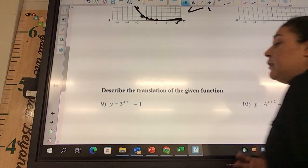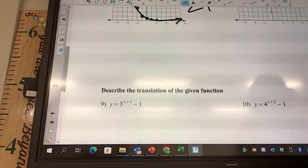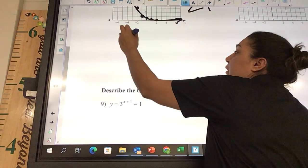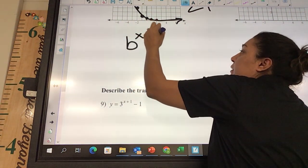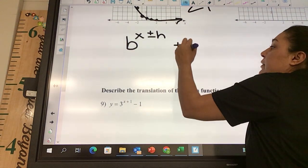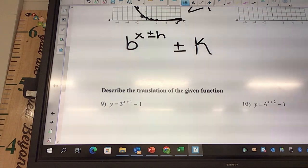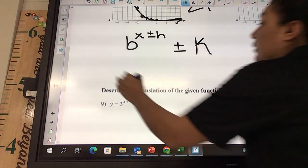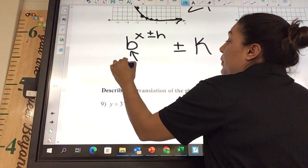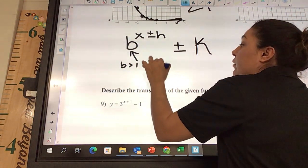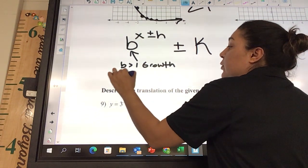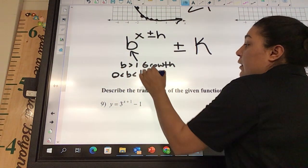And then the other part of your quiz is going to be this. Make sure that you have these notes. They're in the form of B to the X plus and minus H plus or minus K. And this is just what we did yesterday. So make sure you have the formula on your paper. Same thing, it's growth. If B is greater than 1, we're at growth. If B is between 0 and 1, it's going to be decay.